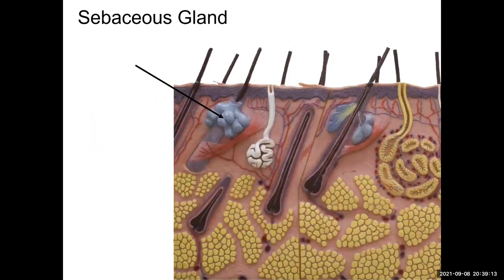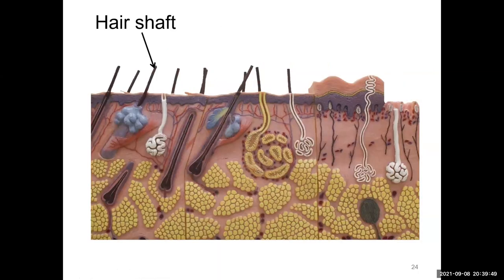The third type of gland is the sebaceous gland, closely associated with hair. It surrounds the hair follicle and produces an oily, viscous secretion — sebum — that covers your hair. It helps nourish and protect the hair, and also acts as a bactericidal agent, damaging certain bacteria.